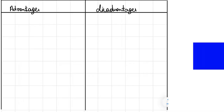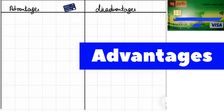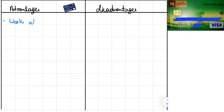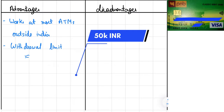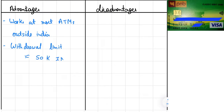The first and most preferred choice for students is usually the international debit card. The advantages are: first, they work at almost all ATMs outside India; second, they usually have a withdrawal limit of around 50,000 INR, though some may have less or more depending on your bank; and third, you can get them easily from a bank by filling up a form or asking a bank representative.